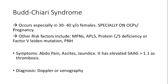Budd-Chiari syndrome predominantly affects females aged 30 to 40, especially those on oral contraceptives or during pregnancy. Other risk factors include myeloproliferative neoplasms, antiphospholipid syndrome, protein C/S deficiency, factor V Leiden mutation, and PNH. Symptoms include abdominal pain, ascites, and jaundice, with elevated SAAG greater than 1.1 indicating thrombosis.